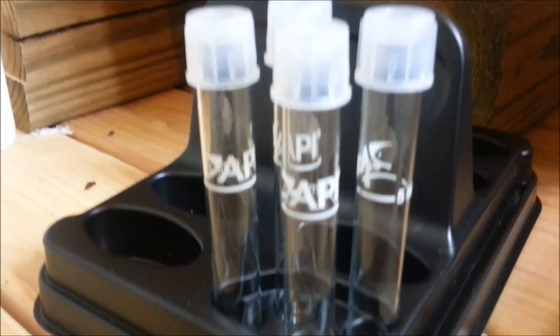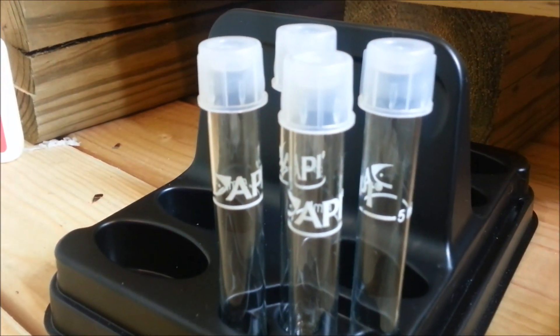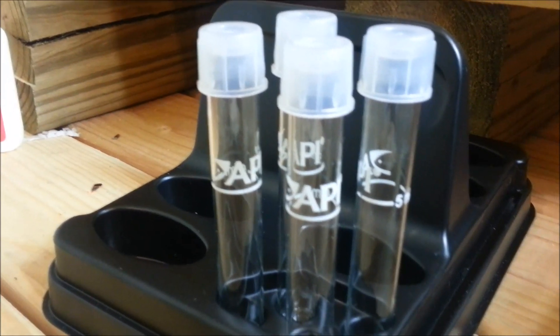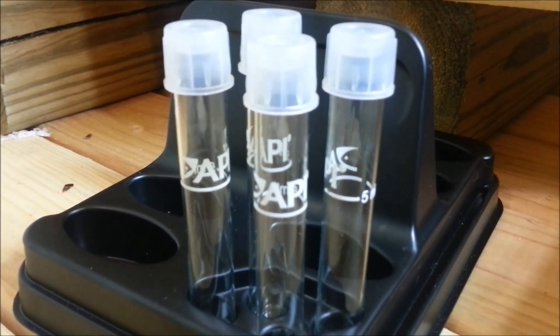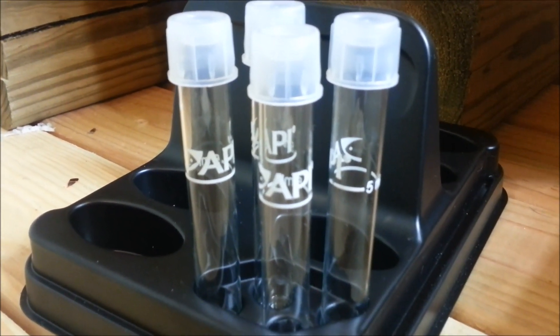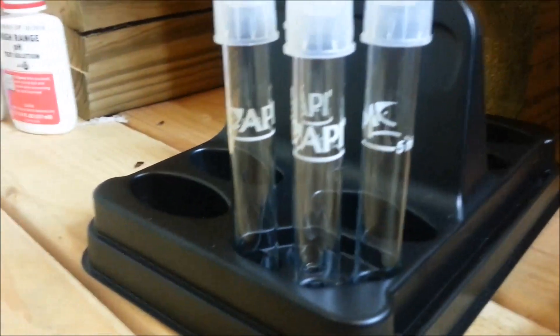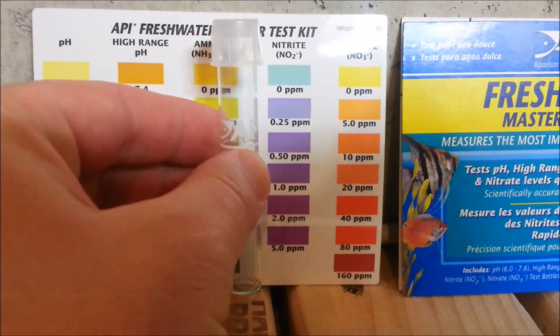You just fill up one of these little vials here to the line, and then follow all the instructions for the test. Drop the drops in, shake it up, and let it sit for whatever specified time - I think it's anywhere from two to five minutes. Then you just take that little test vial there and hold it up to your chart and compare the colors and you get a pretty good reading. It's been pretty accurate so far.